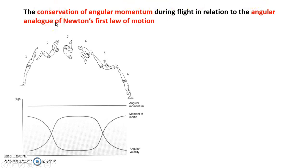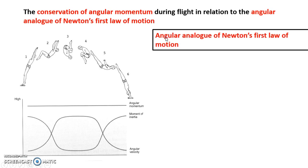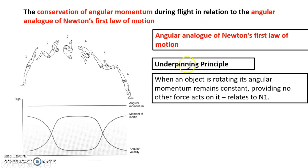Conservation of angular momentum. This is something that is part of the specification and was also a question asked last summer for second years. We understand the concept of the conservation of angular momentum — when the angular velocity is high, the moment of inertia is low. This is due to something called the angular analogue of Newton's first law of motion. We know the first law of motion with regard to linear motion: a body will remain at rest or at uniform velocity until an external force is applied. When it comes to the angular analogue, the underpinning principle is: when an object is rotating, its angular momentum remains constant providing no other force acts on it.